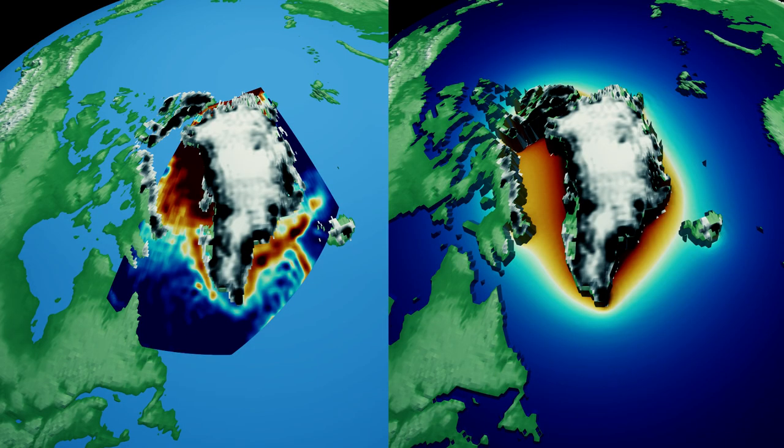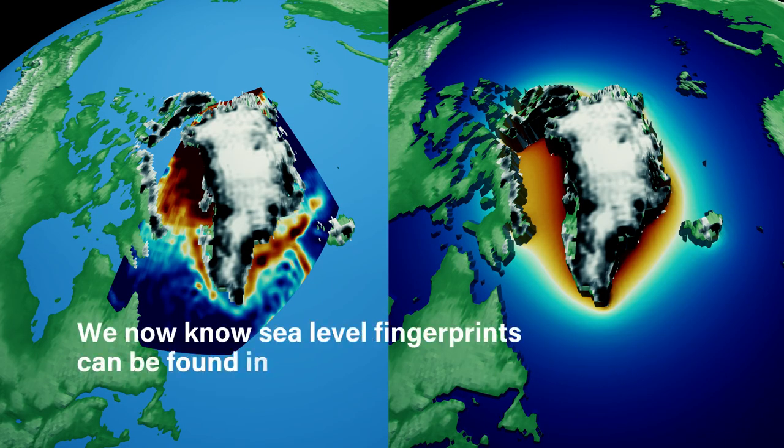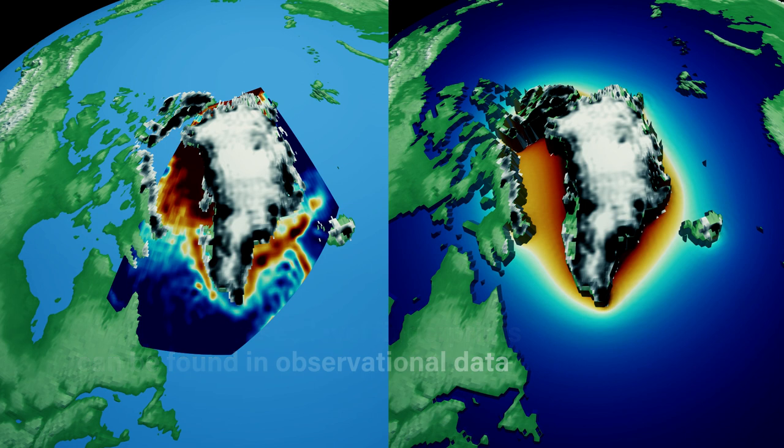This unique pattern of sea level change has been predicted by theory and by computer models for several decades, but we've never seen it in the real world in our observational data sets. So this shows that our models were correct, our theory was correct, and we're seeing for the first time a sea level fingerprint in our observations.